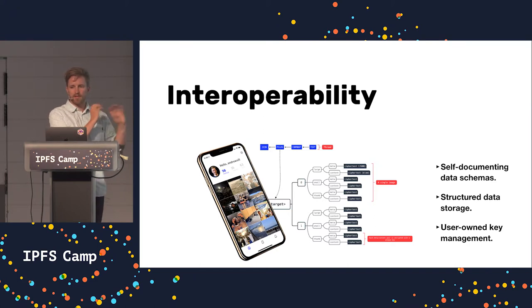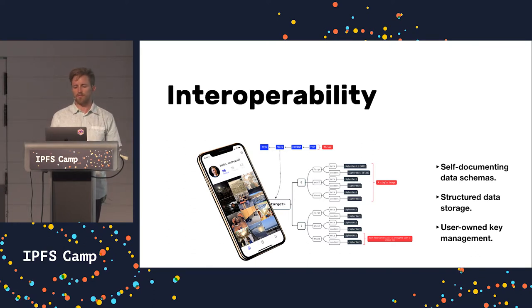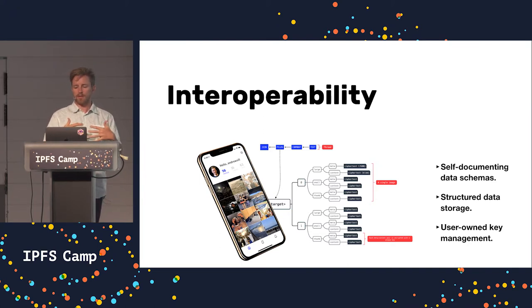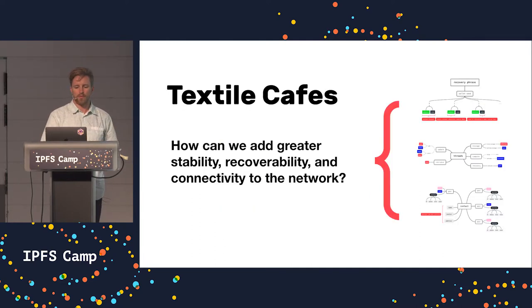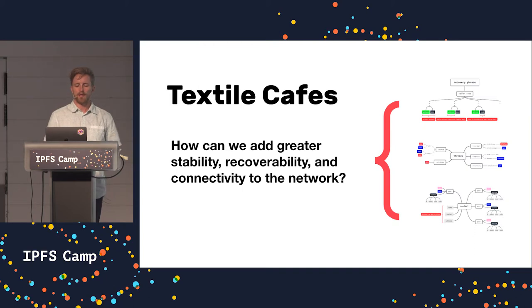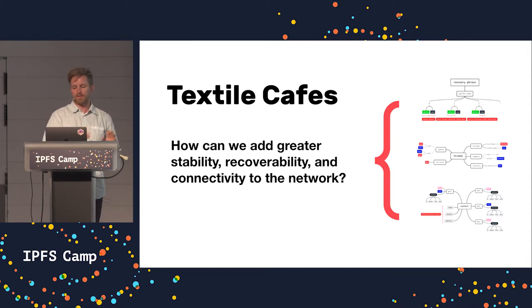Those are all the pieces that you would be building an application on a device or desktop. But there are also some services that we run on the network that help make consumer applications run more fluidly. We call those Textile Cafes. They're Textile nodes that basically run in server mode, so they're always online. And they help us add stability, recoverability, and connectivity.